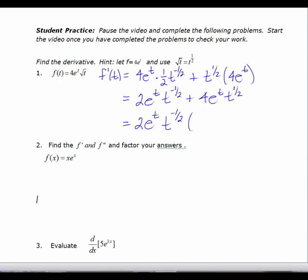If I factor out t to the negative one-half, my first term inside is going to be 1. The second term is 2t, because you need to multiply t to the negative one-half by t to get t to the one-half — since two-halves minus one-half is one-half. So factoring out t to the negative one-half gives a nice algebraic expression that makes finding the zeros of the function much easier.